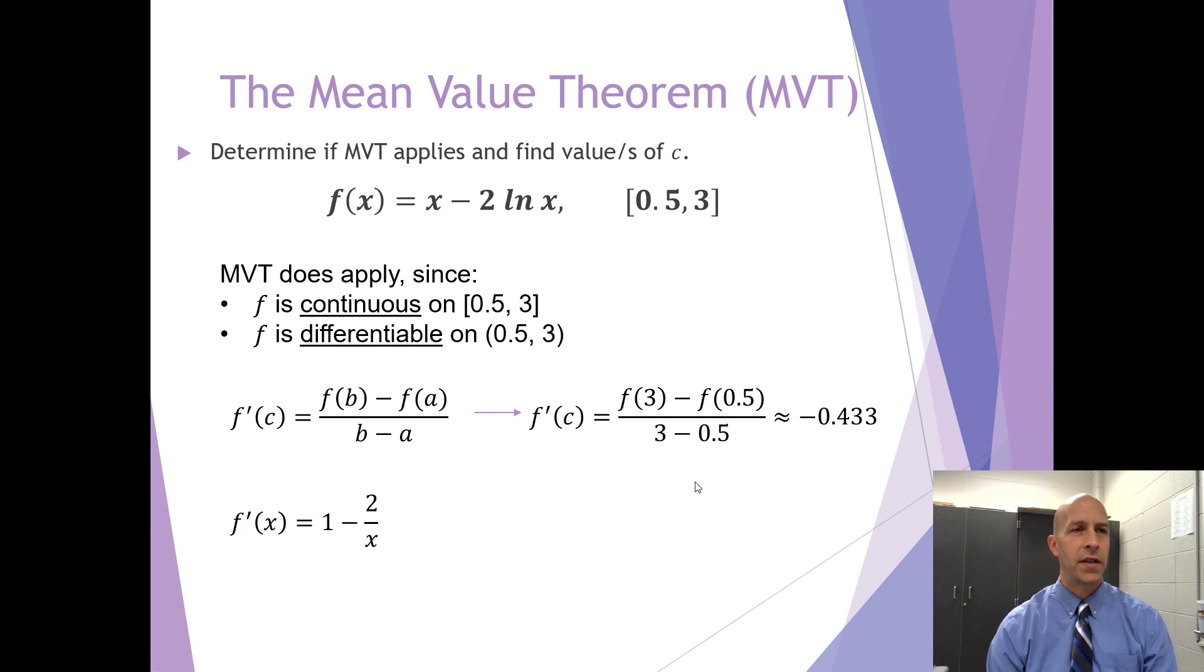We can find the derivative of this function, because it's differentiable, and we get 1 minus 2 divided by x. And then we can go ahead and set that equal to our secant line slope, or our average rate of change, and solve that, and find that the C value that we want here is approximately 1.395.